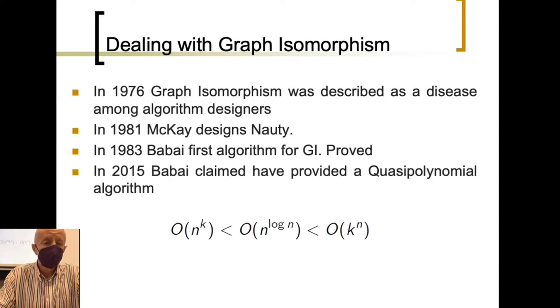Even beyond this problem, I would like to note that some years ago, 45 years ago, 1966, graph isomorphism was described as a disease among algorithm designers.